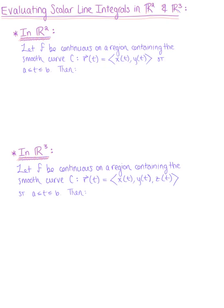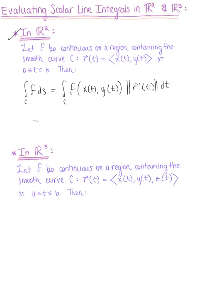We need to state our definitions for evaluating scalar line integrals in R2 and R3 with respect to that arbitrary parameter t. Looking at our definition within R2 first, we let f be continuous on a region containing a smooth curve C — smooth meaning continuous and differentiable. This smooth curve C is defined by the vector-valued function R of t with components x(t), y(t), such that t is greater than or equal to a and less than or equal to b. Then the scalar line integral in R2 is defined as the integral over C of f ds, which converts to the integral over C of f(x(t), y(t)) multiplied by the magnitude of the tangent vector with respect to t, dt.